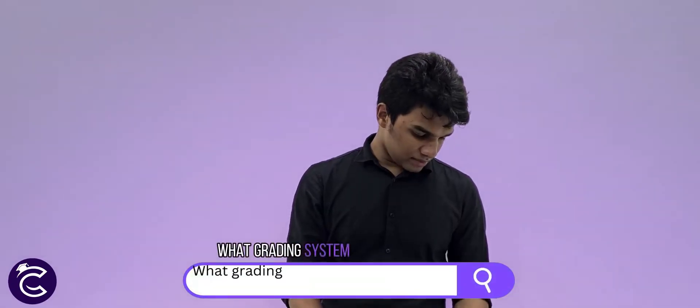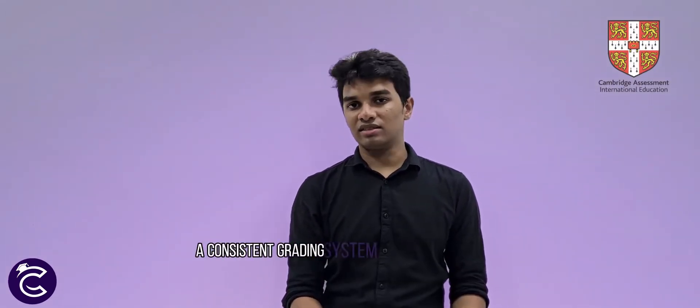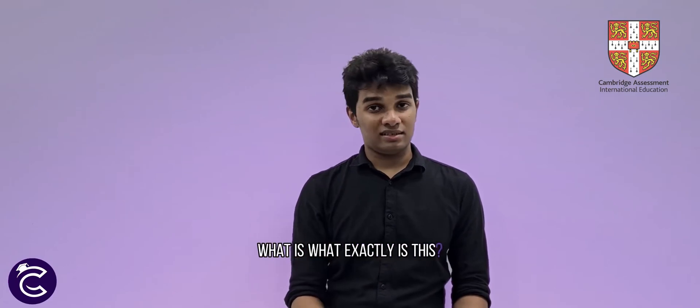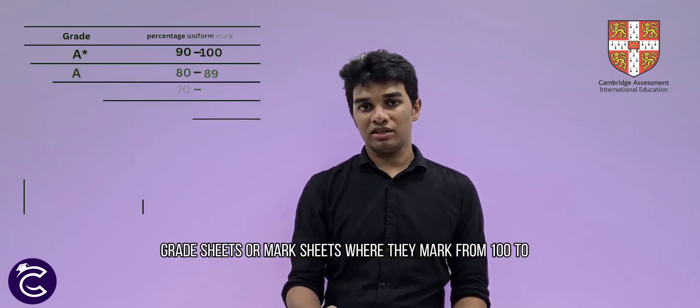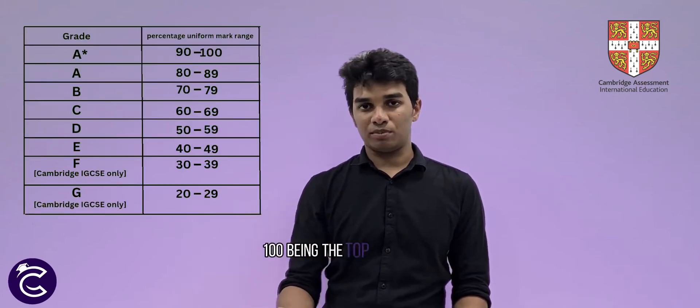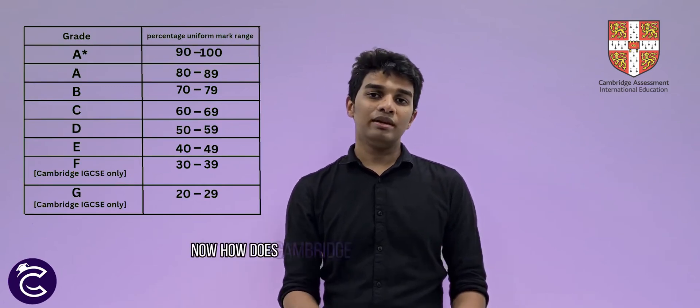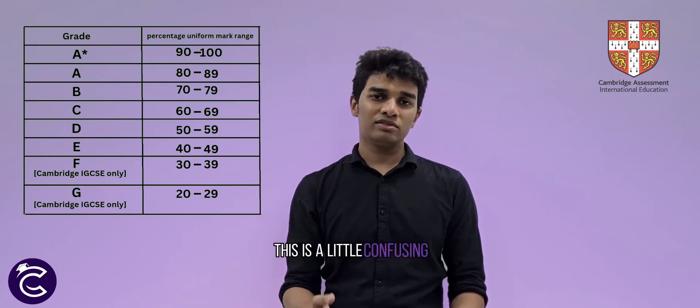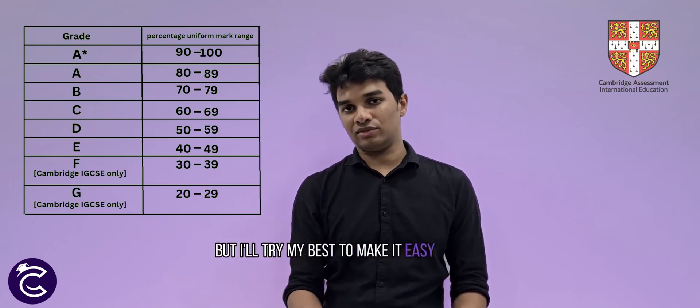So what grading system does Cambridge use? Cambridge uses a consistent grading system with the help of PUM — a Percentile Uniform Mark. This is what you will actually see on students' result sheets, as a mark from 0 to 100, with 100 being the topmost mark. How does Cambridge calculate these PUM marks? This is a little confusing but I'll try my best to make it easy.